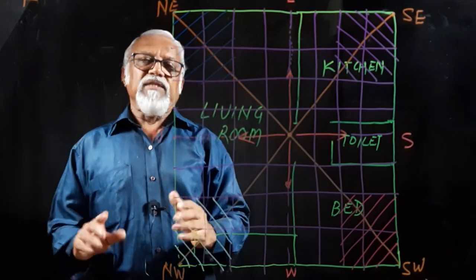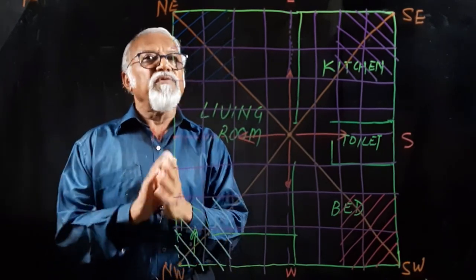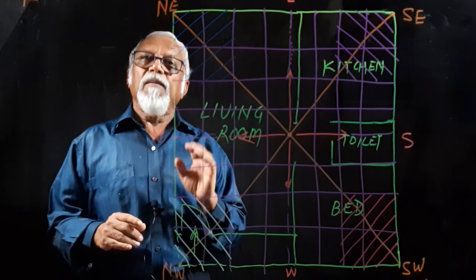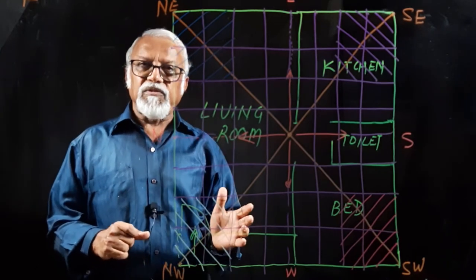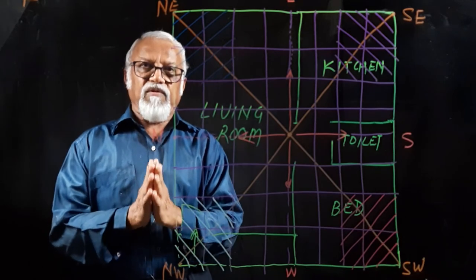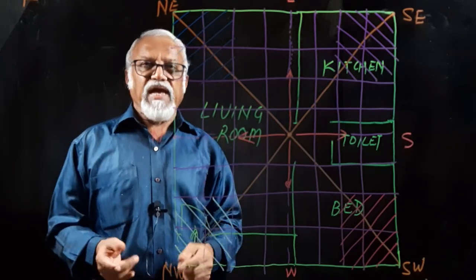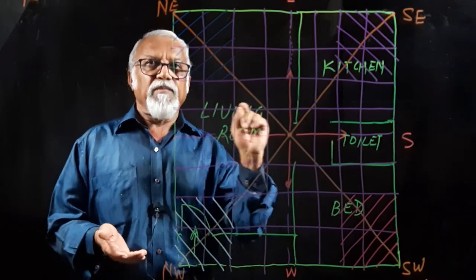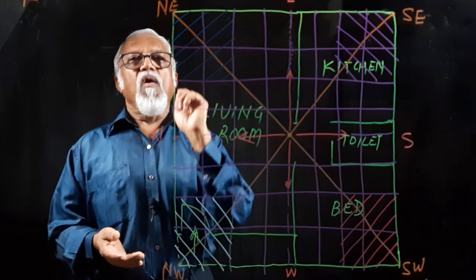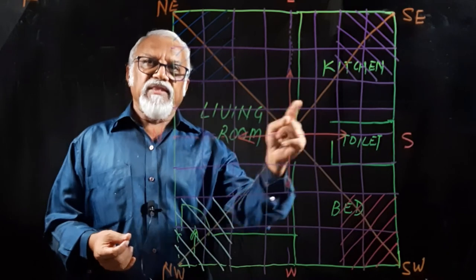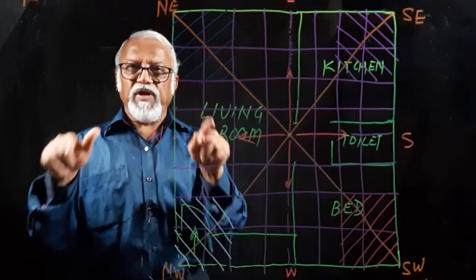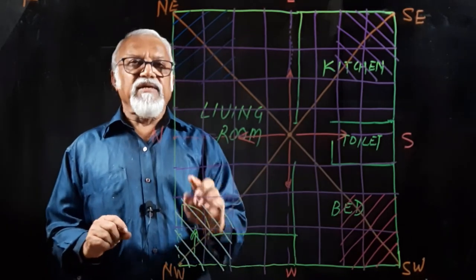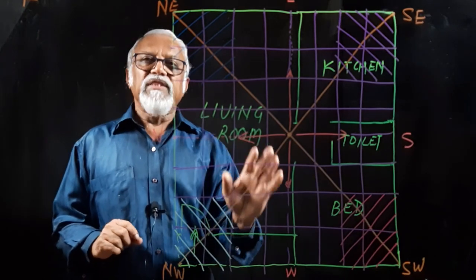Now, one by one, we will see the importance of each and every direction. So, today's purpose was to know how to draw a plan of your existing house. I think you might have got it very easily. And as an exercise, you can draw the complete plan of your house by taking measurements or just taking steps or measuring the tiles and then drawing the plan, maybe on a square-line book or on a plain sheet of paper.